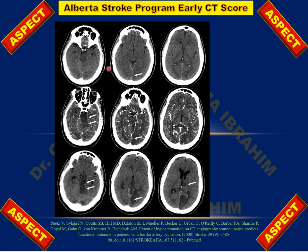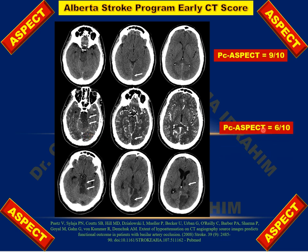Another example: a patient with acute stroke shows an abnormal hypodense area in the left occipital lobe. The initial PC-ASPECTS score is 9 out of 10, as the thalamus and other segments appeared normal. However, on follow-up study, the infarction extended to the pons and to the cerebellar hemisphere. We deduct 2 points for the pons, 1 point for the cerebellar hemisphere, and 1 point for the occipital lobe — giving a score of 6 out of 10. Further follow-up showed extension to the thalamus, deducting 1 more point, giving a PC-ASPECTS of 5 out of 10.